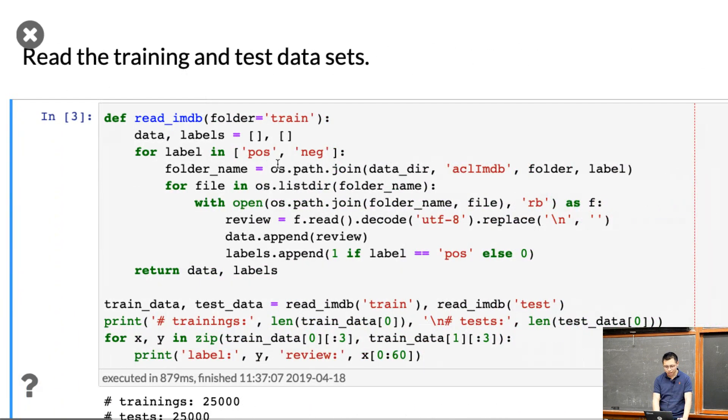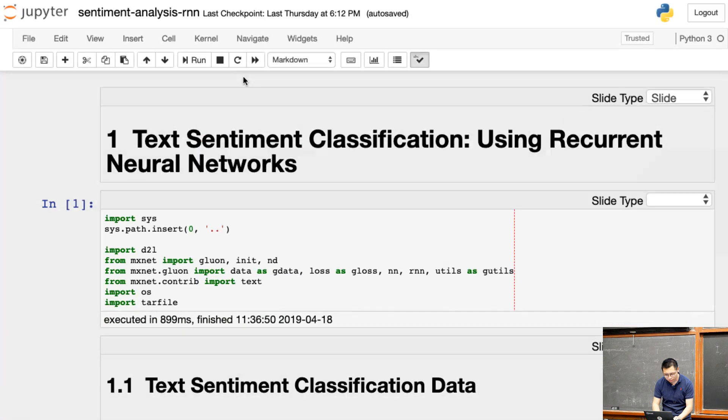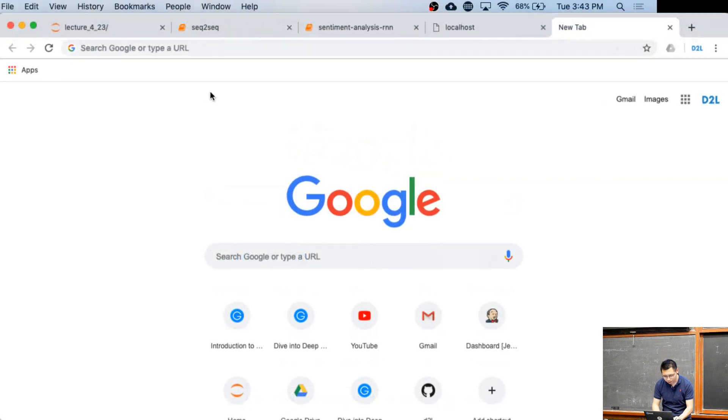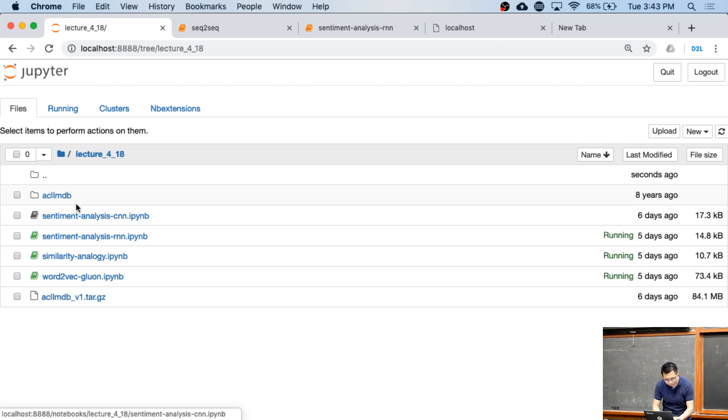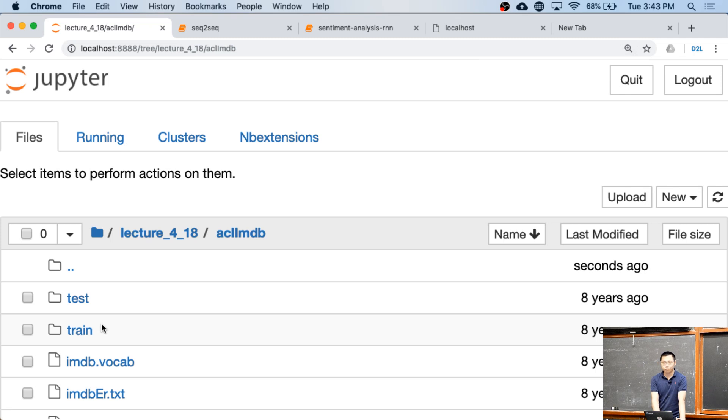We'll classify whether a review is positive or negative about products. We download the dataset from Stanford. It's a pretty tiny dataset and each example contains one text review on Amazon. If you download and extract it, you'll have two folders, very similar to image datasets we have: one called train and one called test.